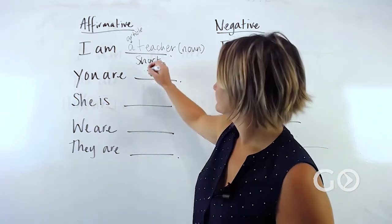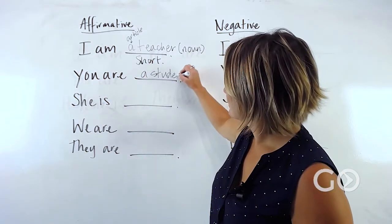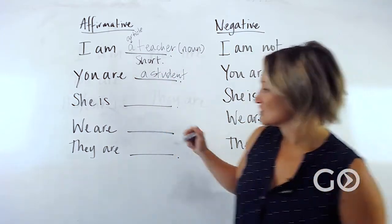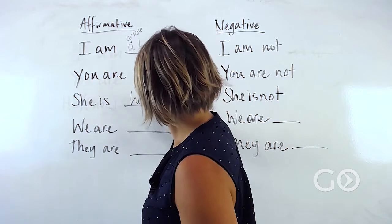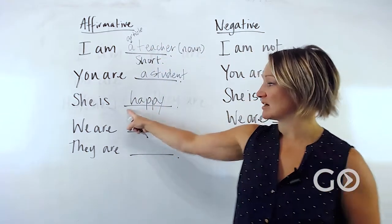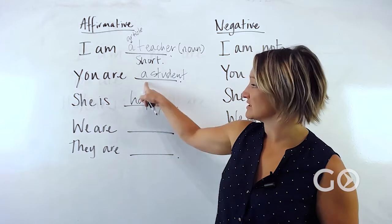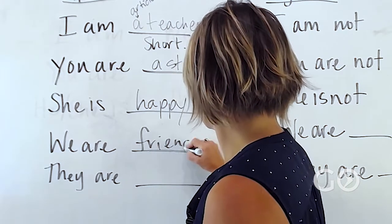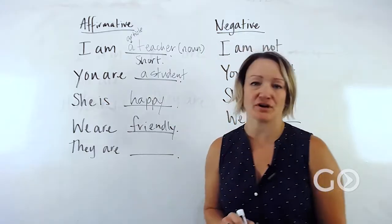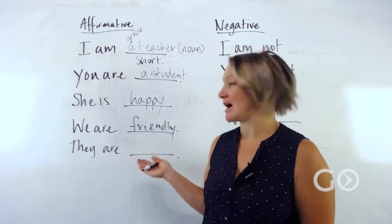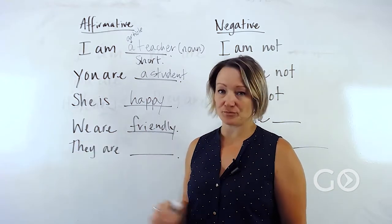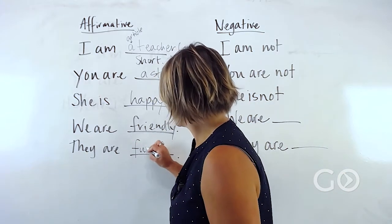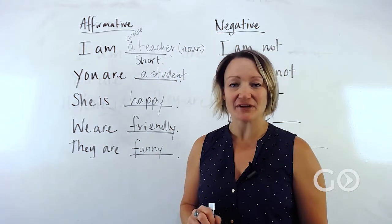You are a student — again, we have an article and a noun. She is happy — notice here we do not have an article; 'happy' is an adjective. We are friendly — that's a word that describes the pronoun. We are friendly. They are funny.